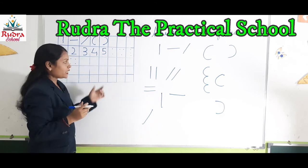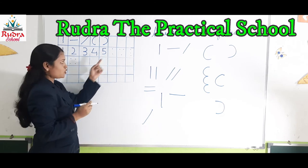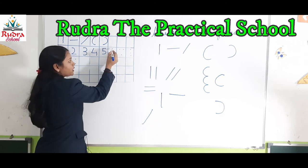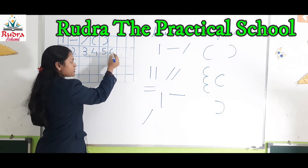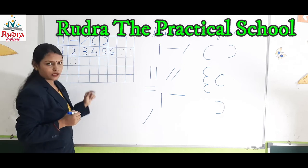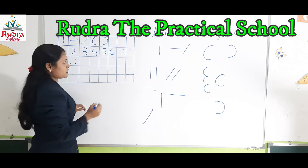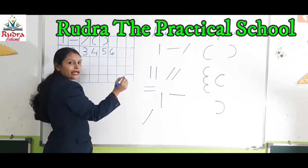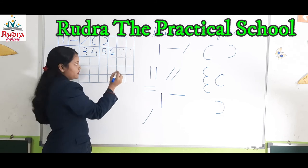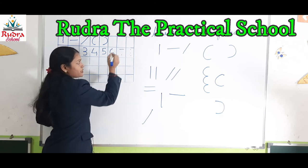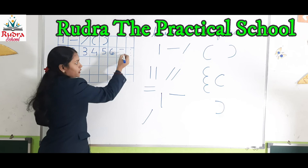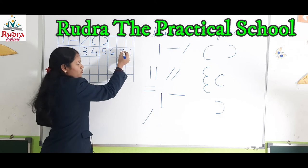Now we will write number six. With the help of these two dots, make a curve from here and join like this — this is number six. Now we will write number seven: join these two dots with a sleeping line and join these two dots with a slanting line — this is number seven.